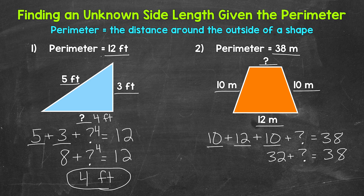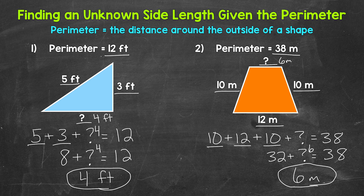So 32 meters plus what equals 38 meters? 32 plus six equals 38, so our missing side length for number two is six meters. We can double check by plugging in six: 10 plus 12 is 22, plus 10 is 32, plus six meters equals 38 meters. Correct.